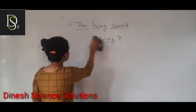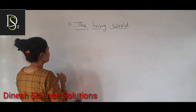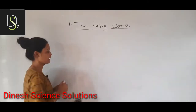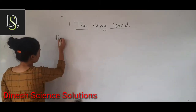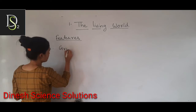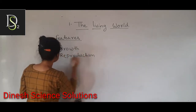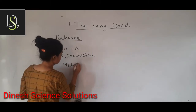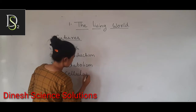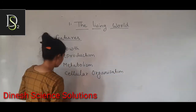Living things are very common — ranging from higher animals, plants, microorganisms, some unicellular, some multicellular organisms. There are five features given in the book. First one: Growth. Second one: Reproduction. Third one: Metabolism. Fourth one: Cellular Organization. And last one: Consciousness.